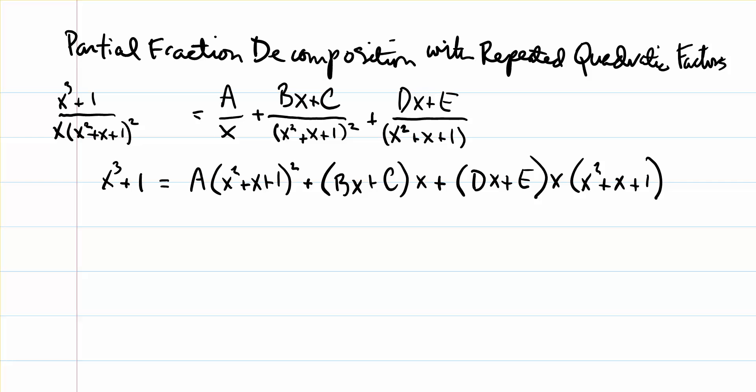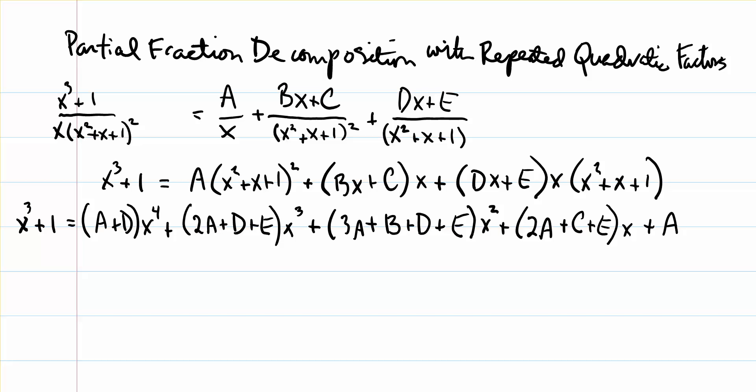The next thing we need to do is multiply everything out and then group our fourth degree, third degree, second degree, first degree, and constant terms. I'm going to skip the middle steps — you can work those out on your own to double-check. Following that, we'll set up a system of equations involving those capital letters that will allow us to solve for each of them.